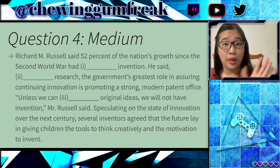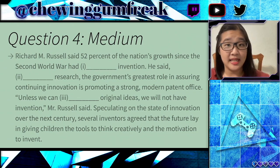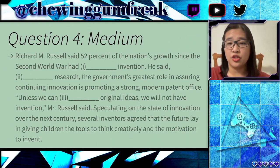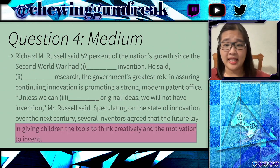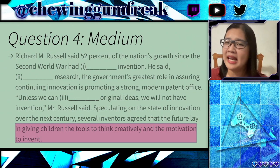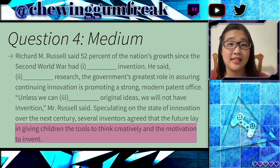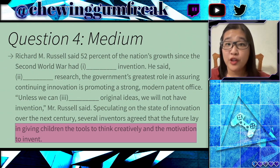Feel free to pause and reread it yourself, but we will break it down a bit. The most important thing here is obviously to note the main idea, which is invention. Everything here seems to point to the idea that invention is quite important. The key idea is that we want to give children the tools to think creatively and the motivation to invent. It's about making sure that we continue to invent — we want our future and our children to think creatively and to continue to invent.